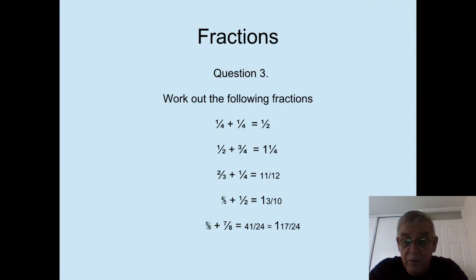Next question, four fifths plus one half. The common denominator this time would be ten, because five and two both divide equally into ten. Five goes into ten two times, so the four fifths then becomes eight tenths. One half in tenths is five over ten. So we then have eight over ten plus five over ten, which gives us thirteen over ten.